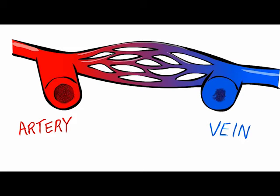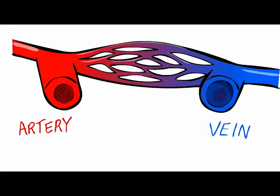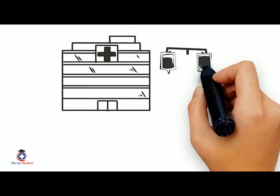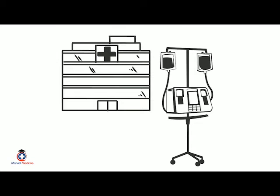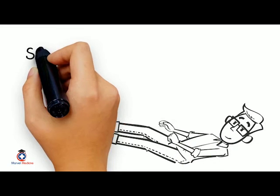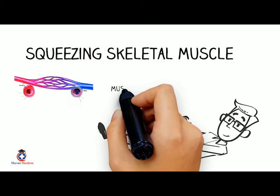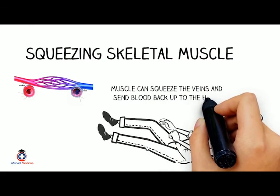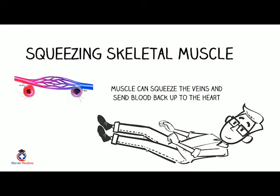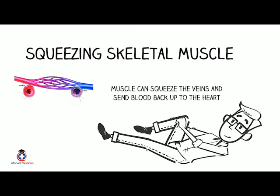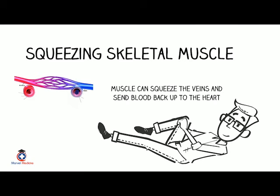Veins have lower pressure than arteries and act as reservoirs where blood pools and can hold large quantities. During exercise, contracting skeletal muscles squeeze the veins running alongside them, pushing blood back up to the heart. This is one of the ways preload increases with exercise.